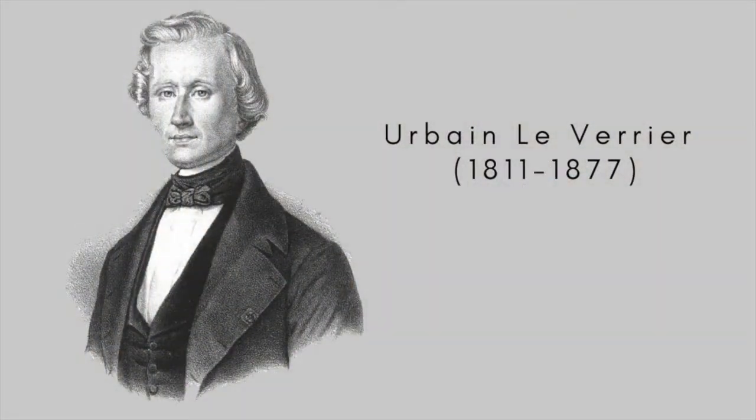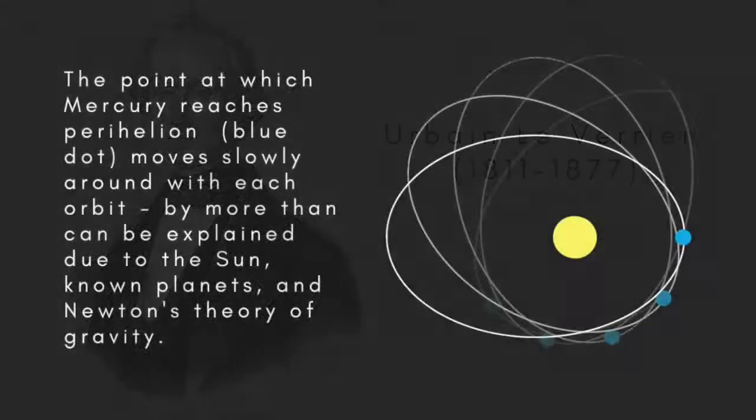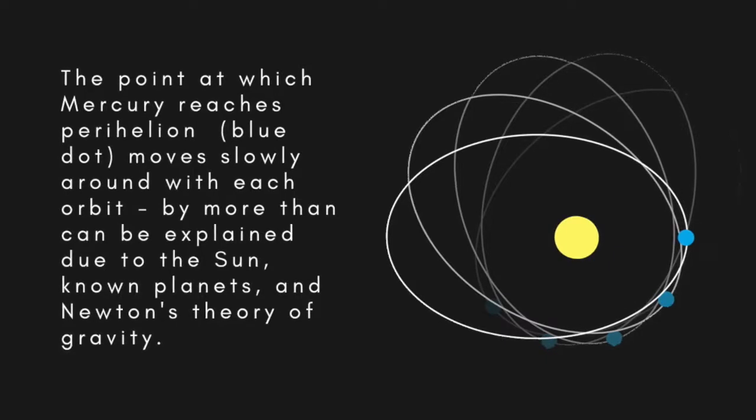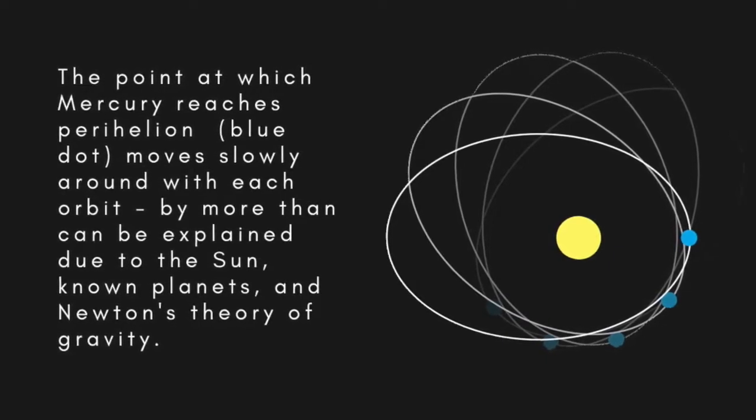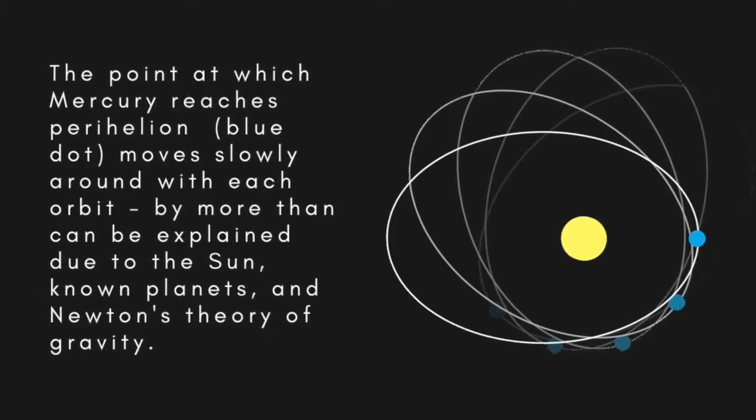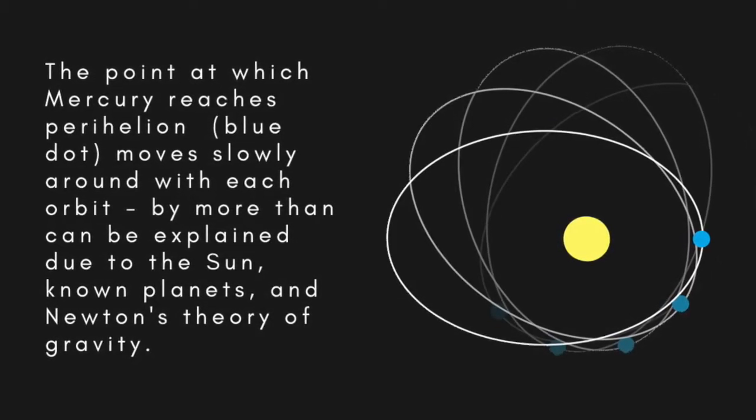In 1859 the French astronomer and mathematician Urbain Le Verrier published results showing that Mercury's orbit couldn't be explained by the combined effect of the Sun and the other known planets using Newton's law of gravity. The problem was that the point where Mercury came closest to the Sun, its perihelion, moved around or precessed more than it should.